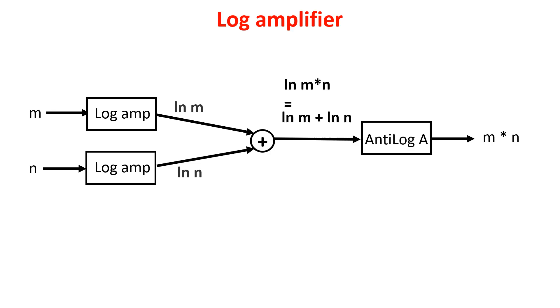Of course the anti-log is the exponentiation, so this circuit performs a multiplication using three components: log and anti-log amplifier and an analog adder. All the operations can be performed using operational amplifiers.